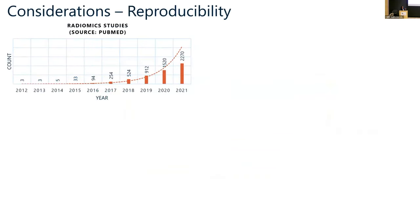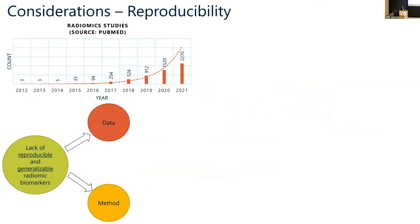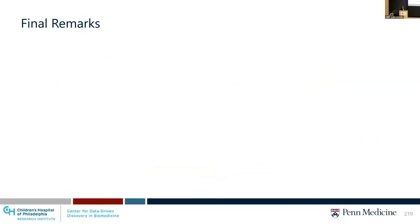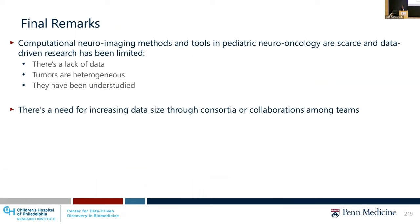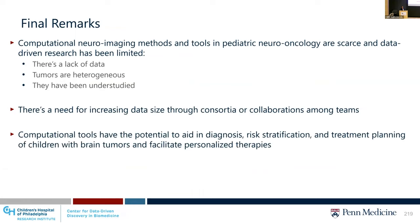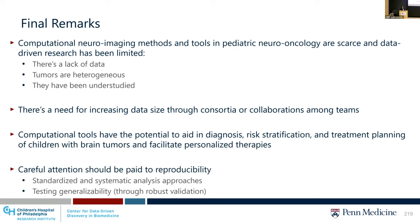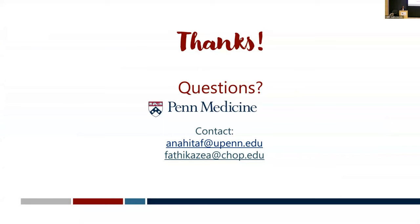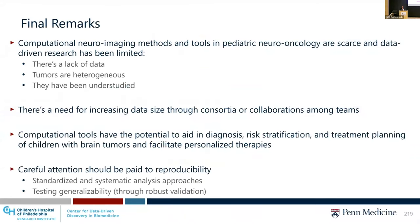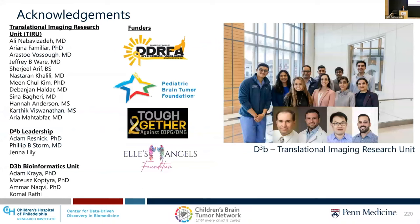To summarize, there is a lack of reproducible and generalizable radiomic biomarkers, stemming from lack of data and limited openness to sharing methods. In conclusion, there is a need to increase data size through consortia and collaboration, and there is potential for computational tools in treatment planning by providing upfront prediction of tumor prognosis. I would like to thank all our team members at the Translational Imaging Research Unit of D3B and the D3B leadership.